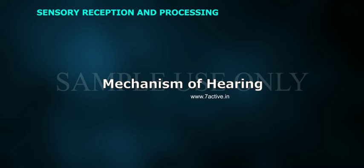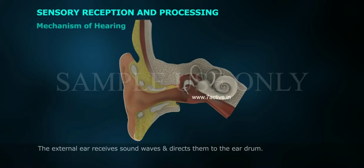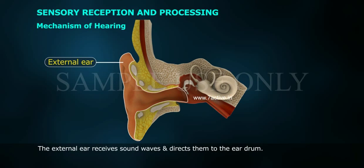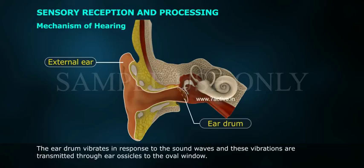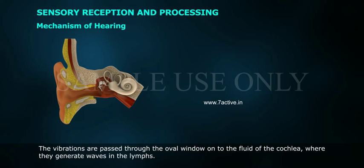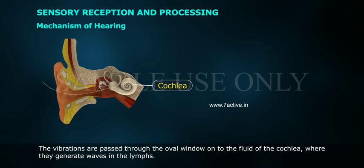The external ear receives sound waves and directs them to the eardrum. The eardrum vibrates in response to the sound waves, and these vibrations are transmitted through the ear ossicles to the oval window. The vibrations are then passed through the oval window onto the fluid of the cochlea, where they generate waves in the lymphs.